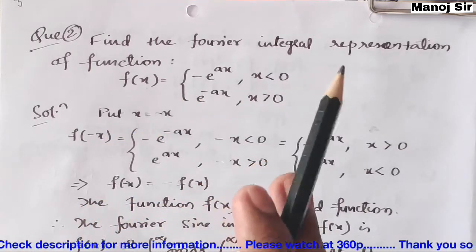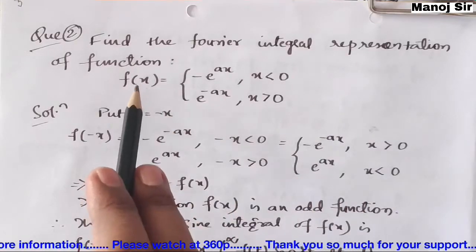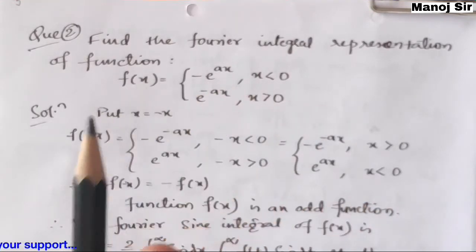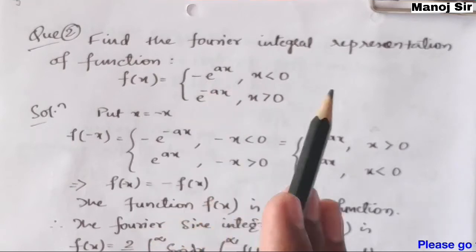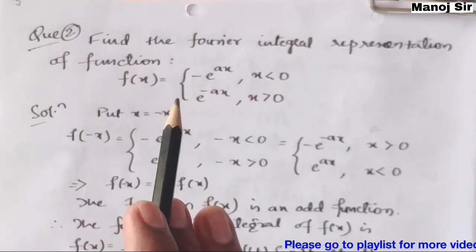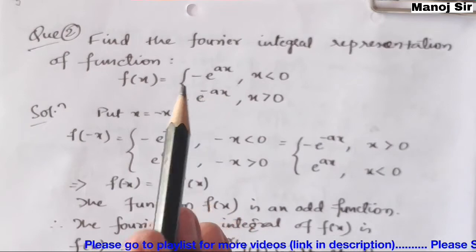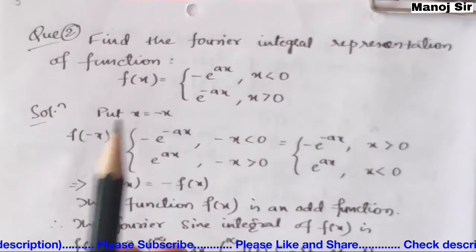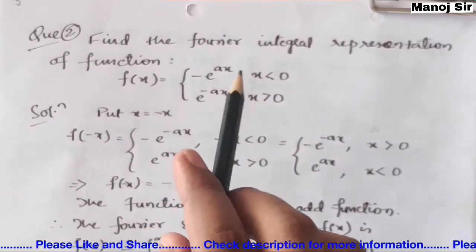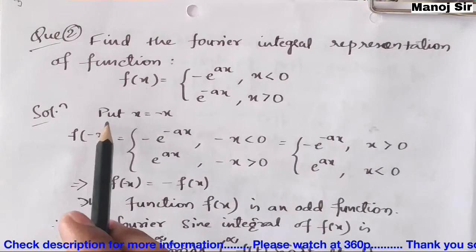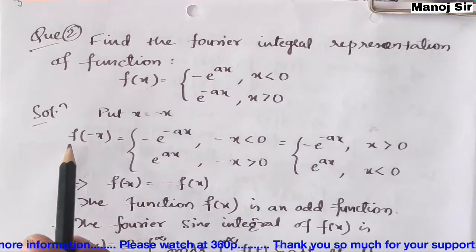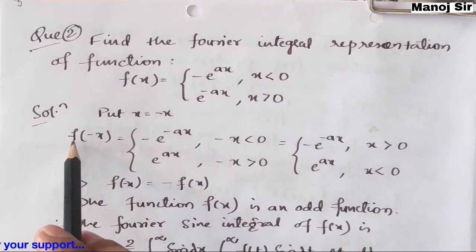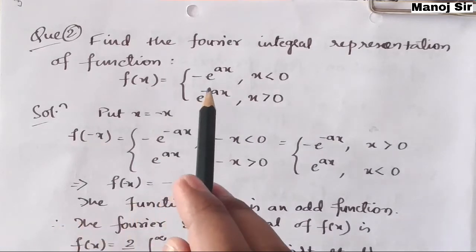First of all, we need to see whether the function f(x) is an even function, an odd function, or neither. If the function is even, we apply the Fourier cosine integral. If it is odd, we apply the Fourier sine integral. If it is neither, we apply the full Fourier integral formula. So, put x = -x.